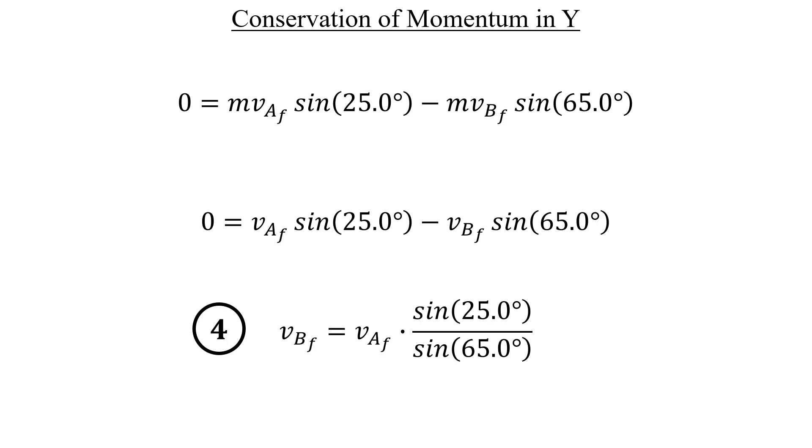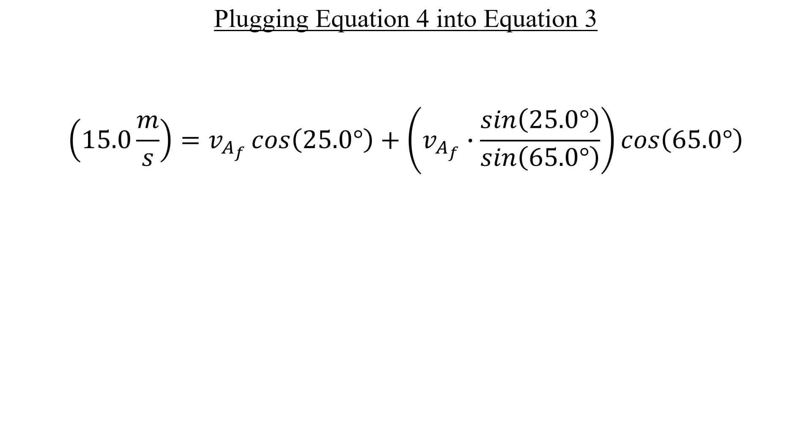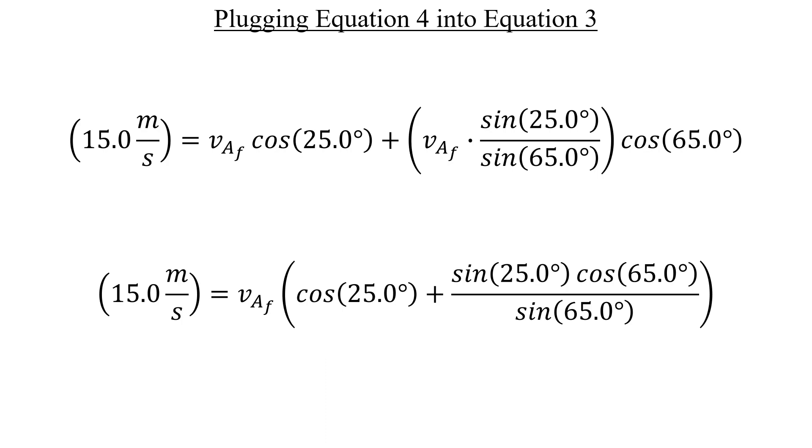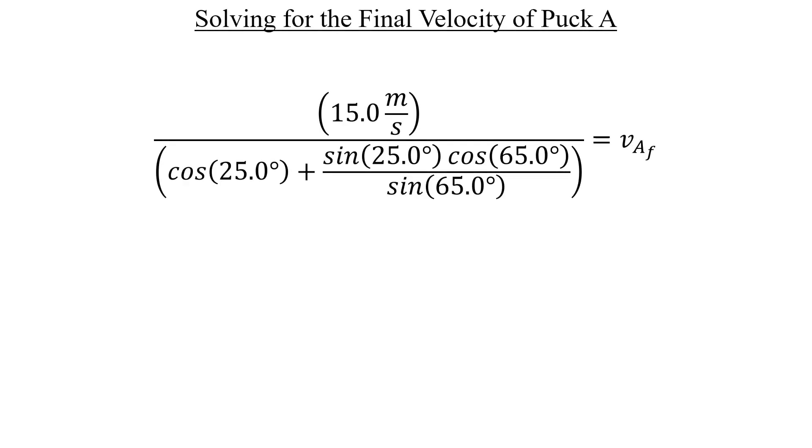Let's take equation number four and plug that back into equation number three, like this. Now we have the final velocity of puck A in both terms, so that can be factored out on the right. Next, let's divide both sides by all of this trig business inside the parentheses. There's not really any numbers to plug in here, since it's all angles and a speed that we're aware of already. So go ahead and just stick the whole thing in your calculator. You should get 13.6 meters per second. And there's our answer for the final speed of puck A.